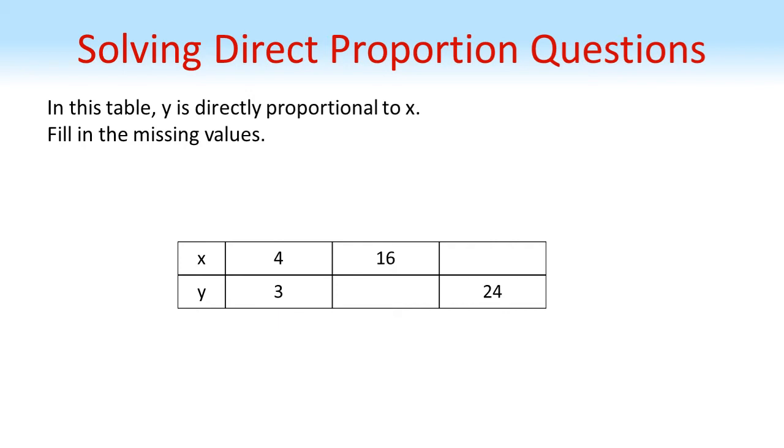Now we're going to use that fact to solve this one. So in this table, again, y is directly proportional to x. We're going to fill in the missing values. We could use the exact same method as we used in the last problem by comparing columns. We're going to look at this a slightly different way just to see a different way of solving it. We're going to compare them row by row.